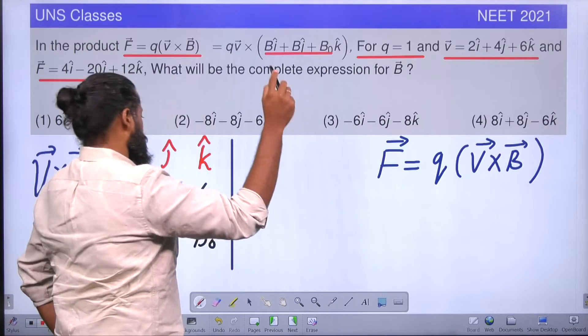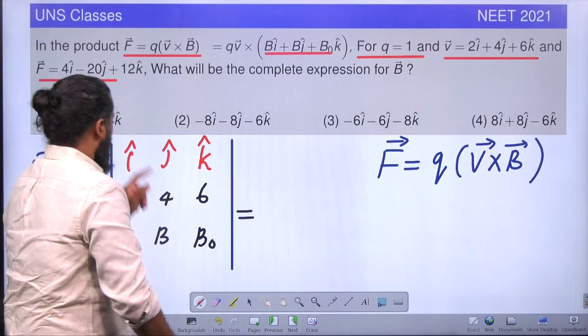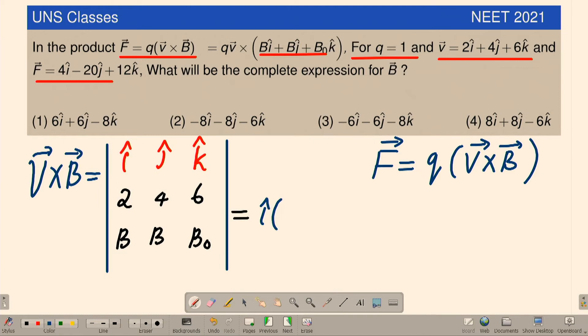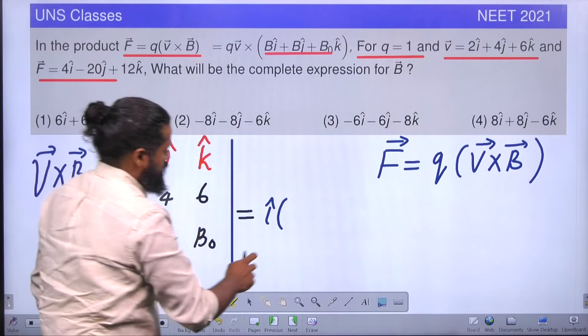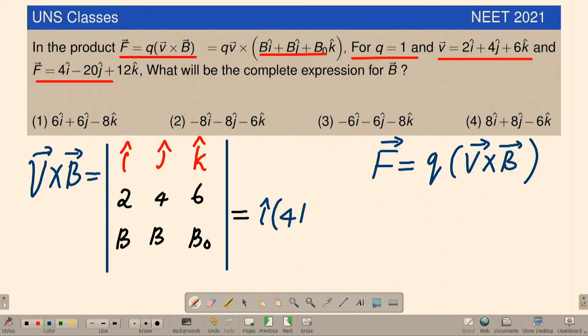Now this determinant will be equal to i cap multiplied by, you have to take this: 4B₀ - 6B.